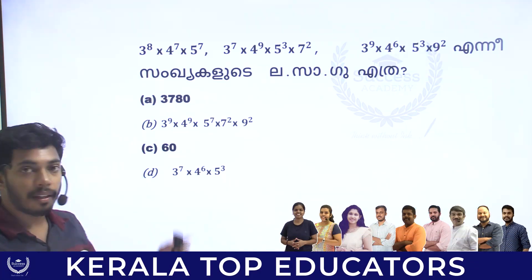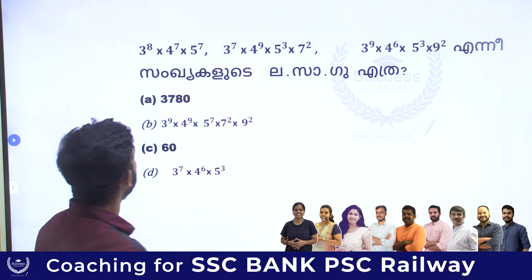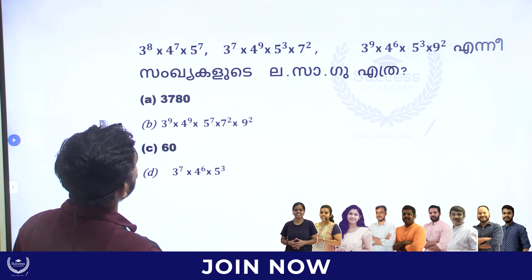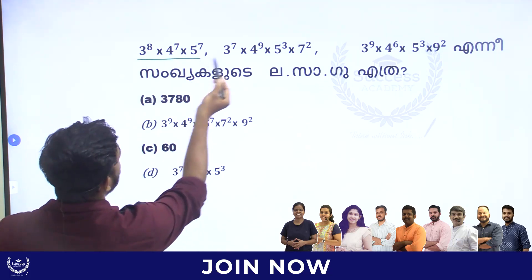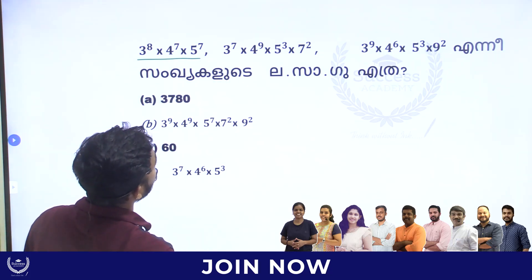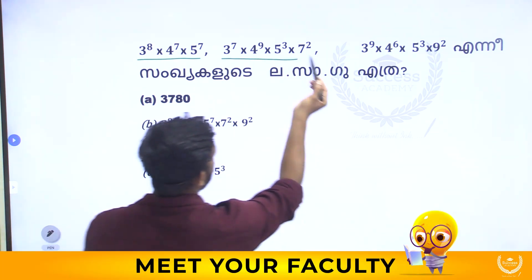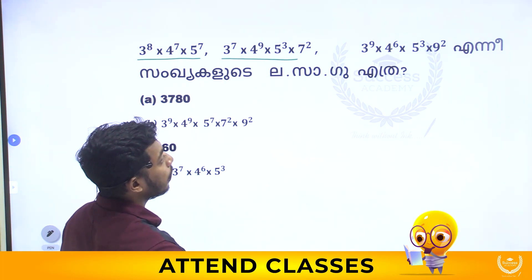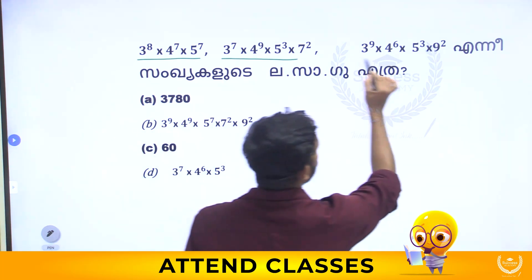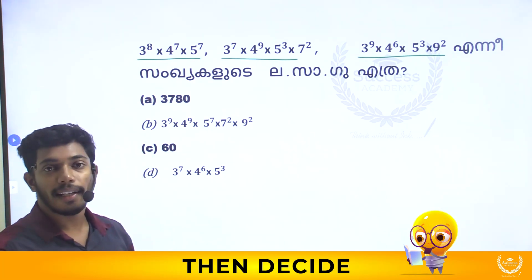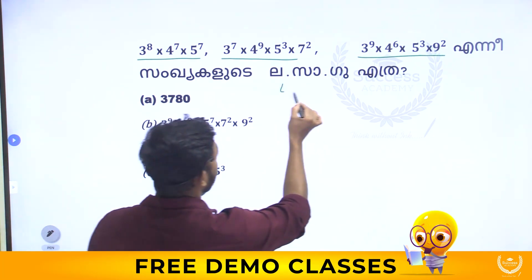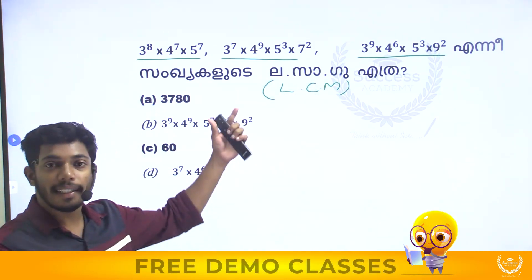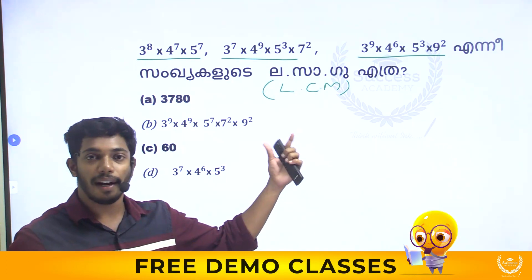Next question: 3 raised to 8 × 4 raised to 7 × 5 raised to 7; next is 3 raised to 7 × 4 raised to 9 × 5 raised to 3 × 7 raised to 2; and 3 raised to 9 × 4 raised to 6 × 5 raised to 3 × 9 raised to 2. We are looking for LCM. Because of the similar base terms, we look at LCM.